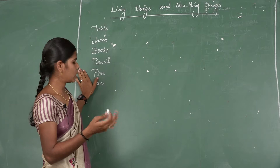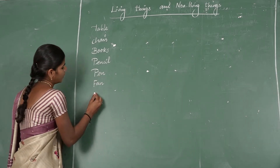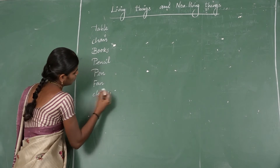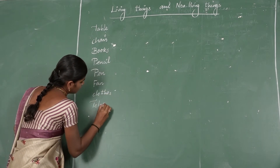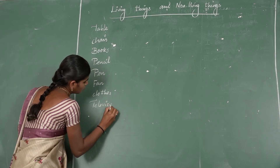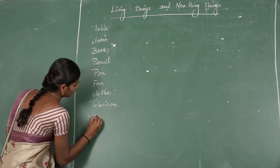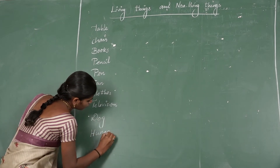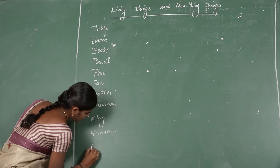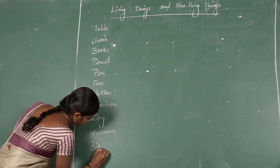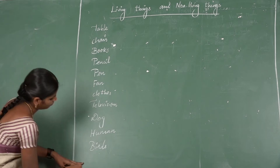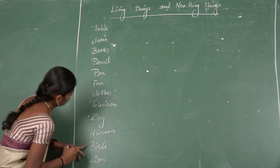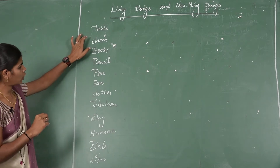Now let's see outside the classroom. Outside, what are the things around us? Say some examples. So clothes, animals also - dog, human, birds, lion. These are things around us.